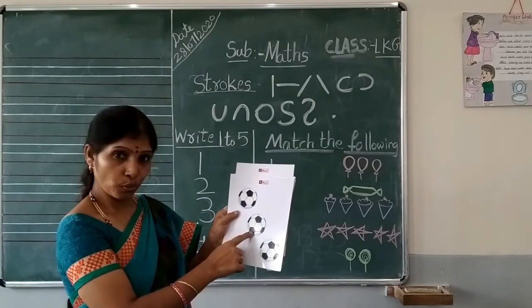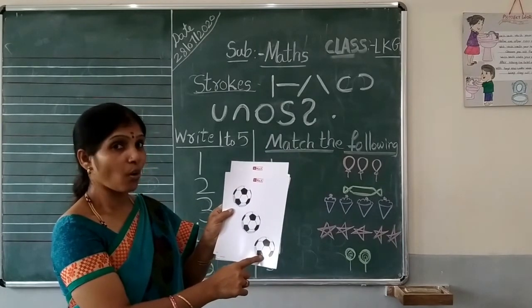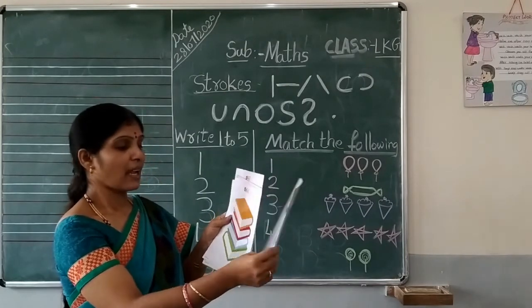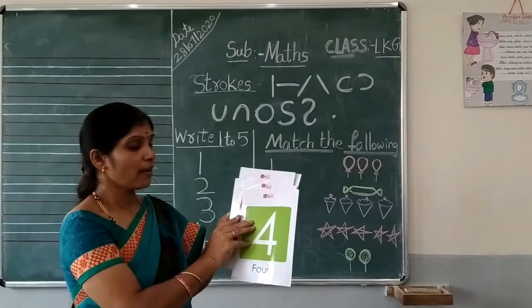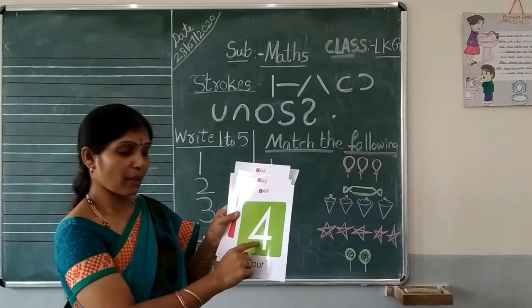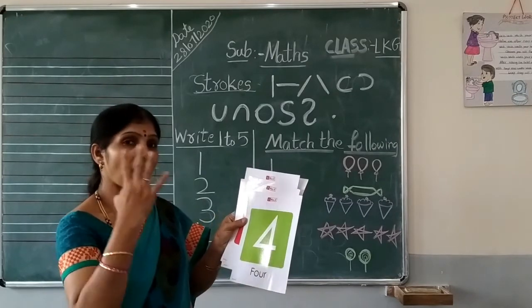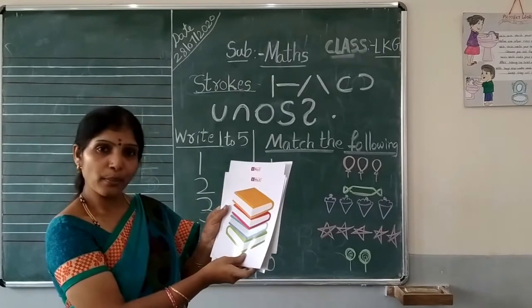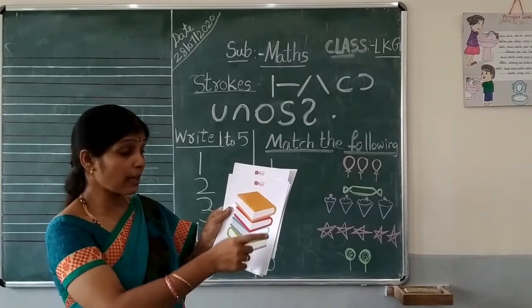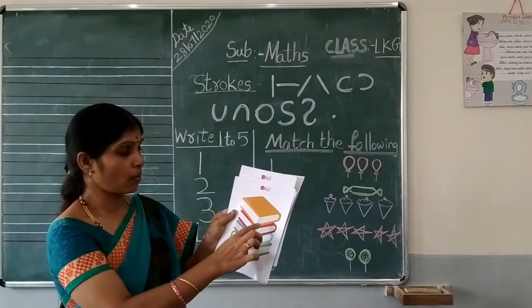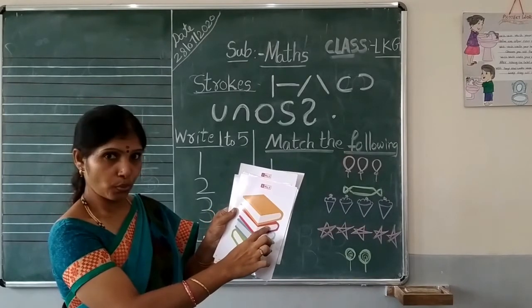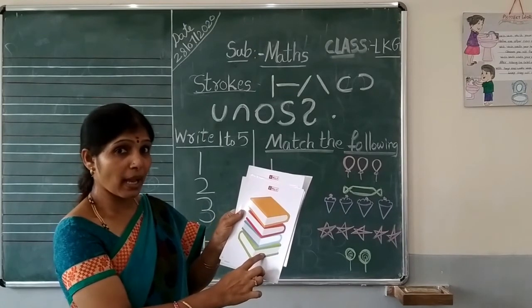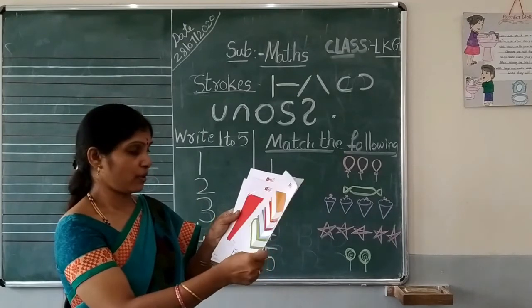1, 2, 3. How many balls? 3 balls. Next, 3 after number 4. Which number? Number 4. See children, these are balls. How many balls are here? Let's count. 1, 2, 3, 4. How many balls are here? 4 balls.